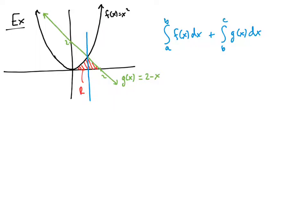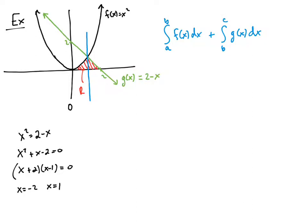We need to find all the limits. For the left portion, we're going from 0 to where the functions intersect. Setting x² = 2 − x gives x² + x − 2 = 0, factoring to (x + 2)(x − 1) = 0, so intersections at x = −2 and x = 1. Since −2 is outside our region, x = 1 is the intersection. The right bound is 2. So we set up the integral from 0 to 1 of x² dx plus the integral from 1 to 2 of (2 − x) dx.